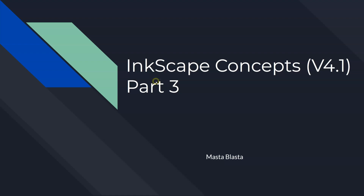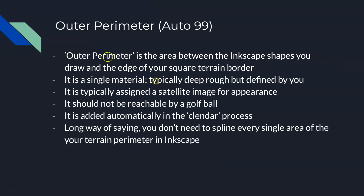Inkscape Concepts Part 3. In this one, we're going to talk about this thing called Outer Perimeter. It's also called Auto 99. I want to give you the history of where that 99 came from.